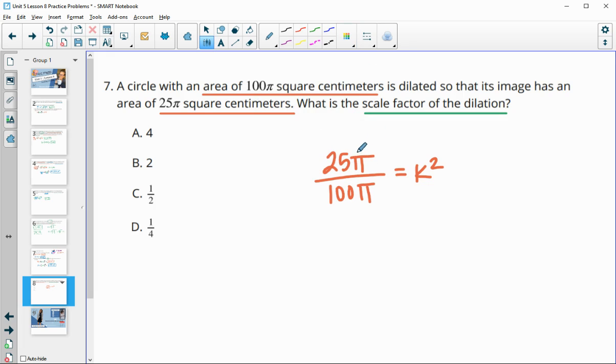These pi's cancel out, and we can square root since both are perfect square numbers. Then k we're going to get is 5 over 10 because the square root of 25 is 5 and the square root of 100 is 10. And then this simplifies to 0.5.